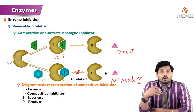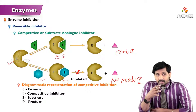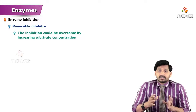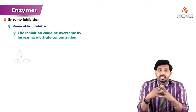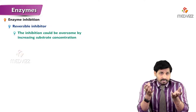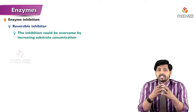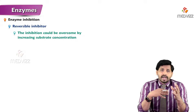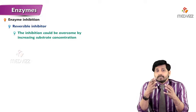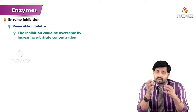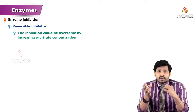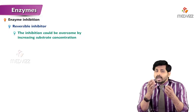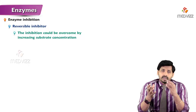This type is known as competitive or substrate analog inhibition. Importantly, this inhibition can be overcome by increasing substrate concentration. For example, if there are 50 inhibitors and 50 substrate molecules, there is equal competition. But if you increase the substrate to 100 molecules while keeping only 50 inhibitor molecules, the substrate wins the race and the enzyme preferentially binds the substrate rather than the inhibitor.